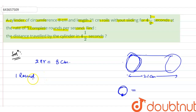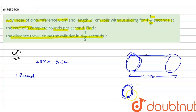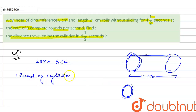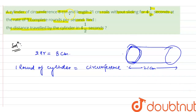So one round of cylinder is equal to circumference. It is 3D mensuration, so you have to imagine it. Think of it as a circle with a point marked on it. When it moves and comes back to the same position, it completes one round, which equals one circumference. So one round of cylinder equals circumference.